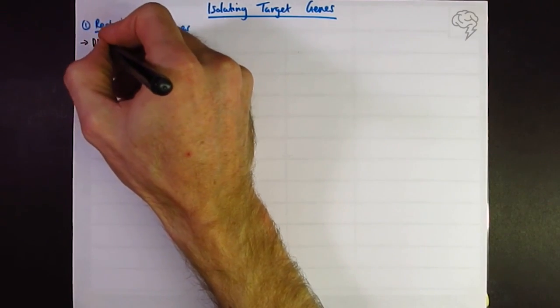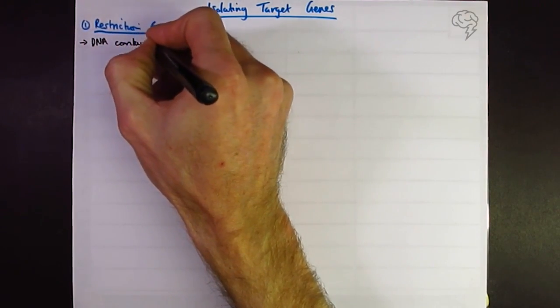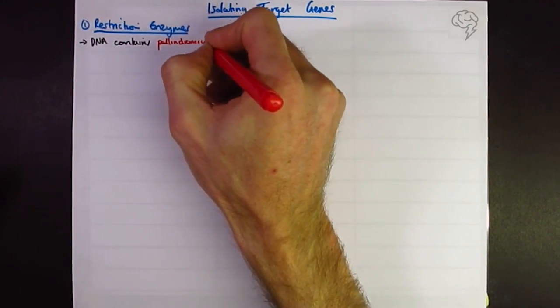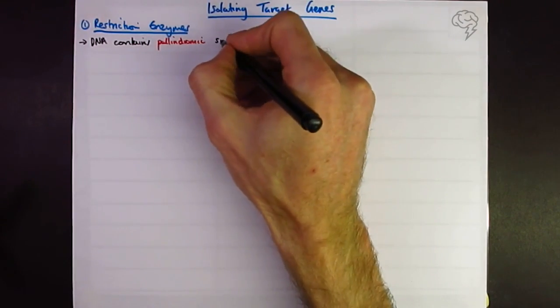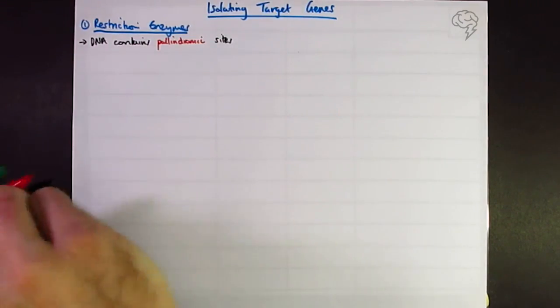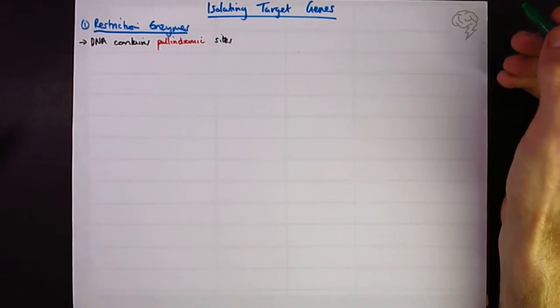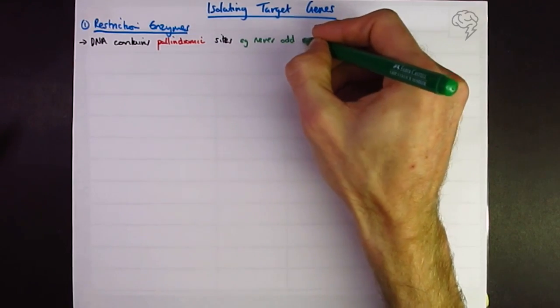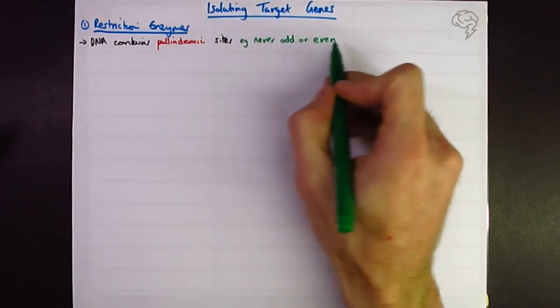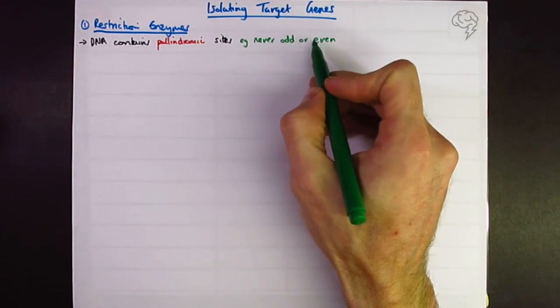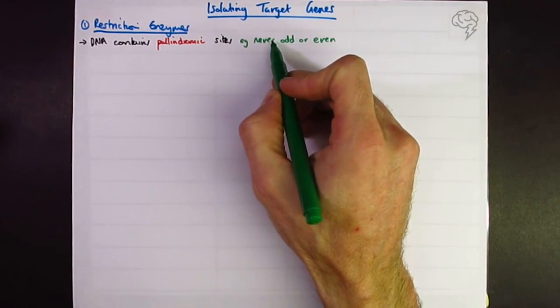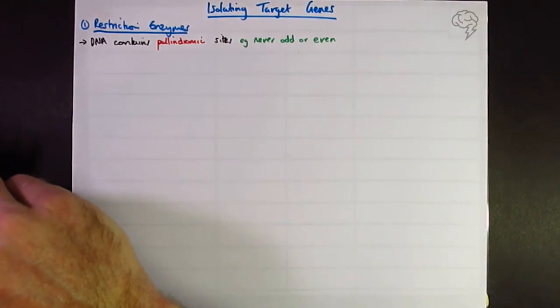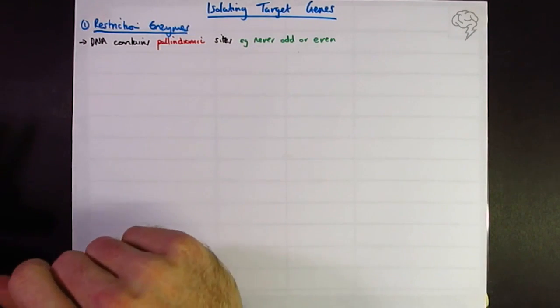So DNA contains palindromic sites or sequences. I'm going to put palindromic in red once. It's not a key term you have to use in answers very often at all. An example of a palindrome is something that reads the same forwards as it does backwards. So an example of a little sentence that does that is never odd or even.